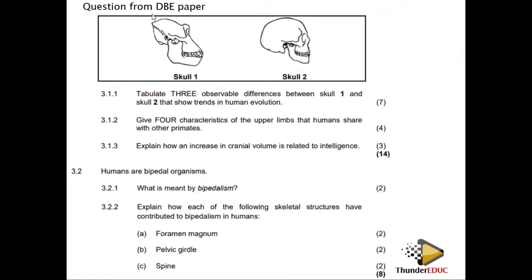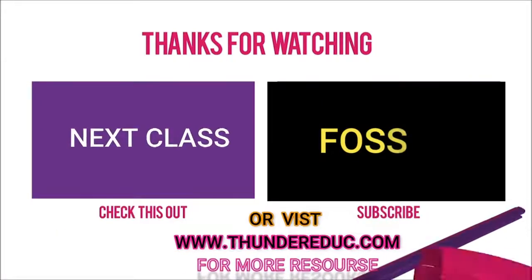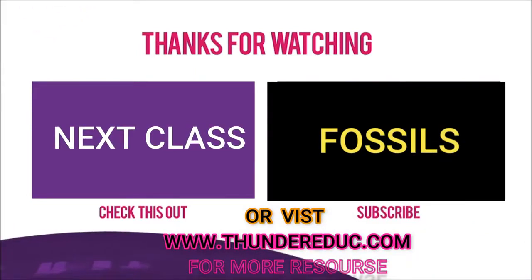Humans are bipedal organisms — they walk on two limbs. Bipedalism means walking on two legs. Explain how each skeletal structure contributed to bipedalism. Foramen magnum: forward position to allow the spine to connect directly to the skull. Pelvic girdle: short and wide to provide surface area and support upper body weight. Spine: S-shaped to absorb compression so the organism can stand upright. We will come back with further evidence for human evolution.